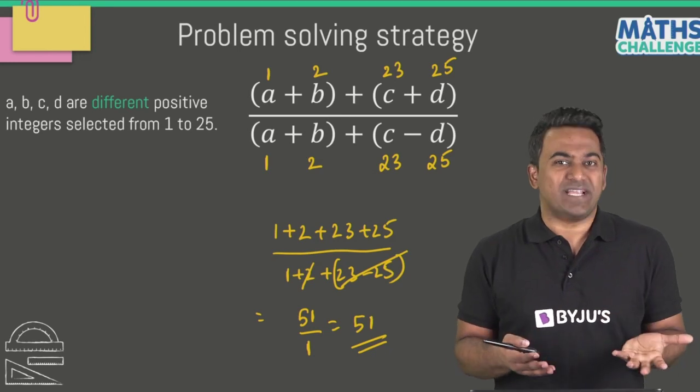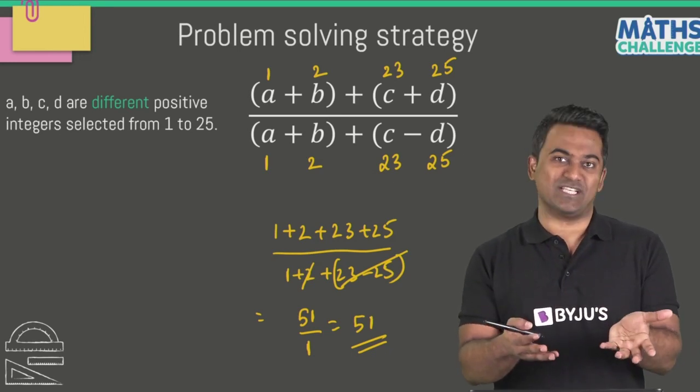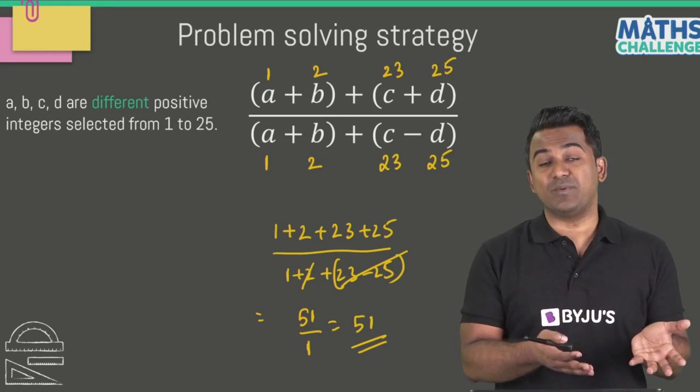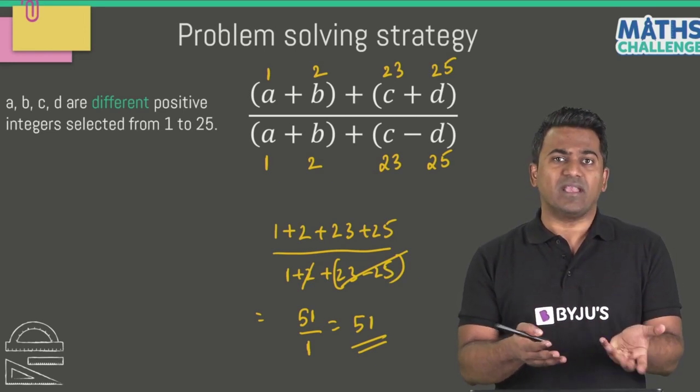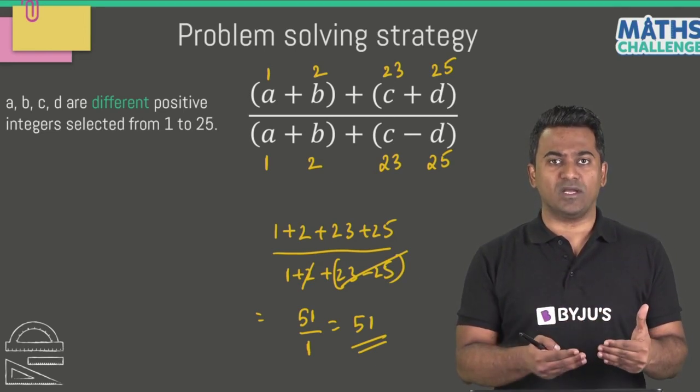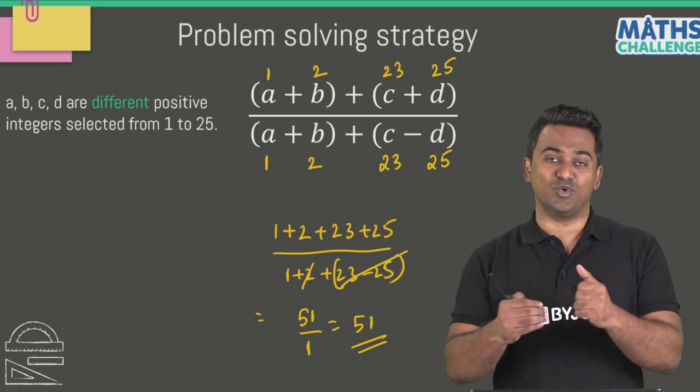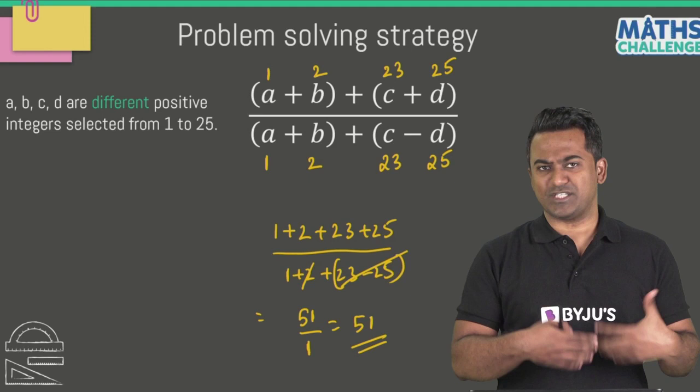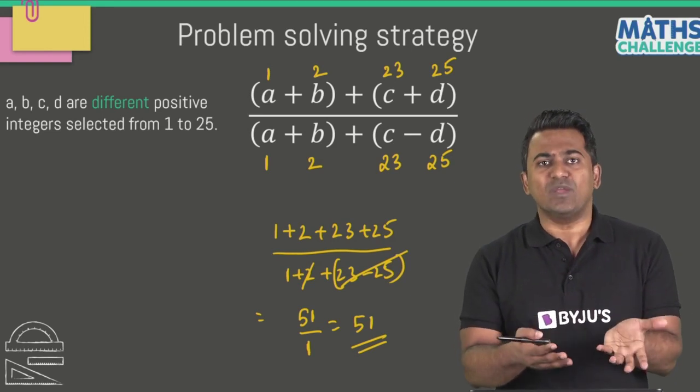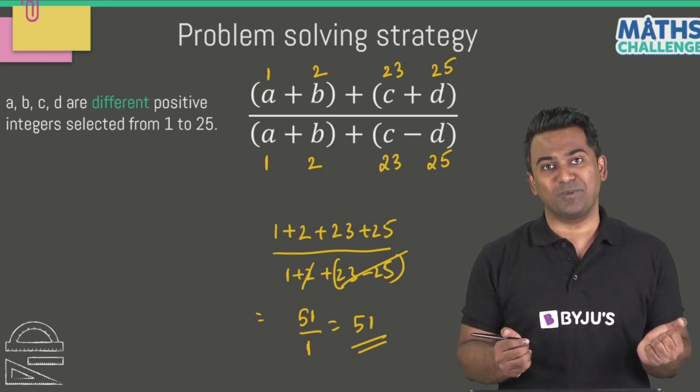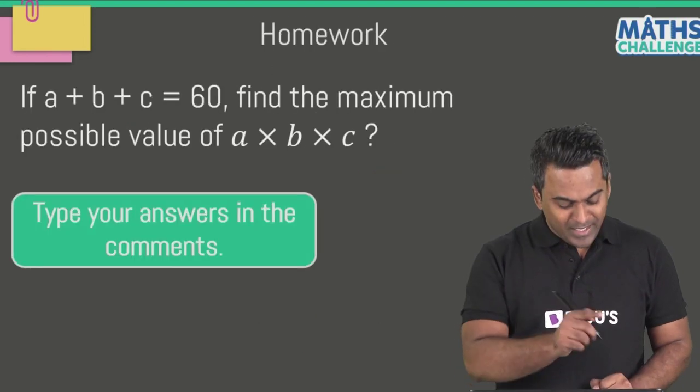You see, fairly simple ideas - plug and play or hit and trial as it's often called. What else did we require to solve this question? The idea that denominator has to be smaller, numerator has to be bigger for the answer to be bigger. Then we just plugged in some numbers, we observed the values, and this is how we were able to solve this problem.